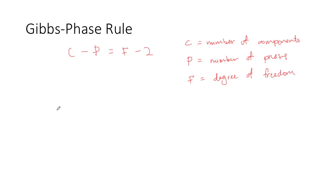Let's go through a few examples. What if a system contains one component at one phase? For scenario number 1, C equals 1, P equals 1.